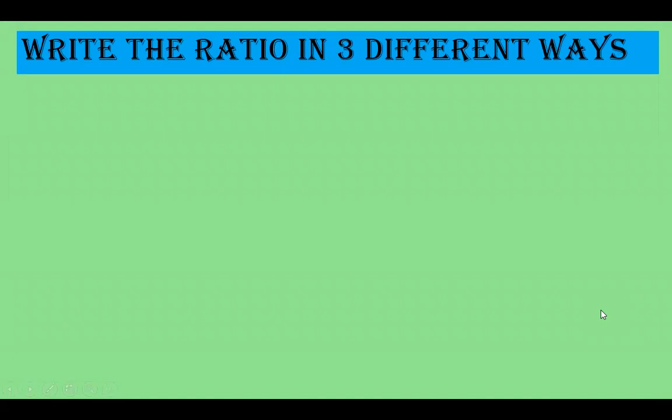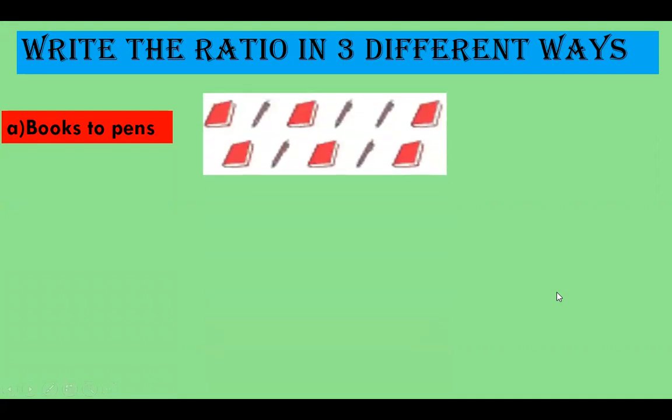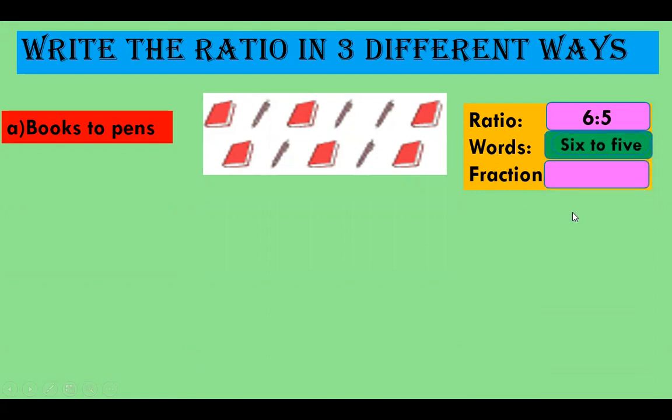Write the ratio in 3 different ways. Books to pens. Write first the ratio, then in words, and lastly in the form of fraction. The ratio is 6 is to 5. We call it 6 to 5 and the fraction is 6 by 5.